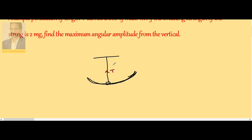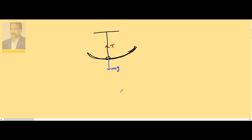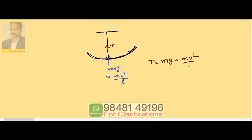So let us say T is the tension, different forces acting, weight of the bob Mg vertically down and also the centrifugal force, outward pulling force Mv² by L. So at the mean position T is equal to Mg plus Mv² by L.